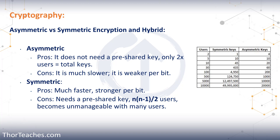In the 1970s, multiple different types of asymmetric encryption were developed. That includes Diffie-Hellman from 1976, and RSA, which was named after its developers — Rivest, Shamir, and Adleman — just like Diffie-Hellman was. RSA was published in 1977.